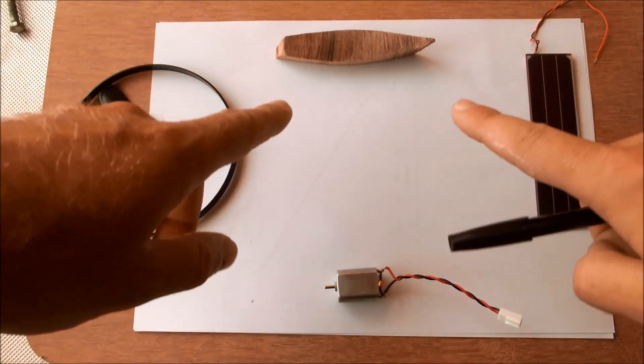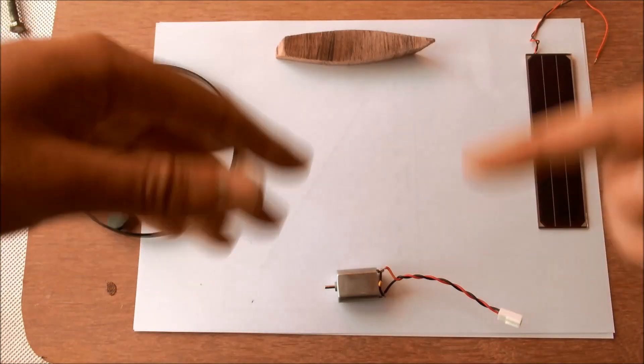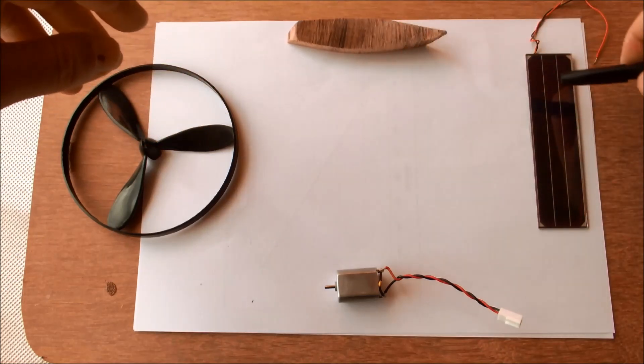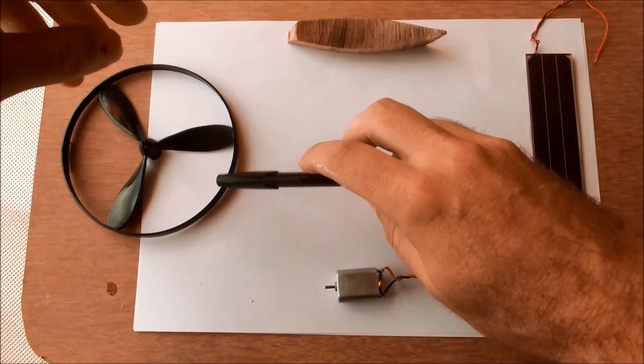These four components represent the main subsystems that all need to be analyzed. This is the hull and the powertrain consists of the solar panel, a DC brushed motor and the propeller.